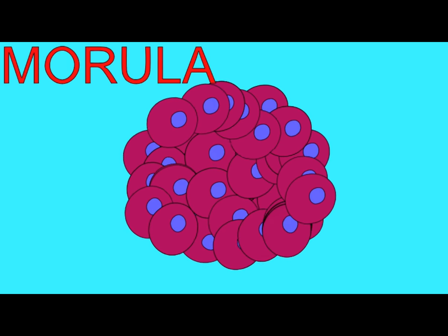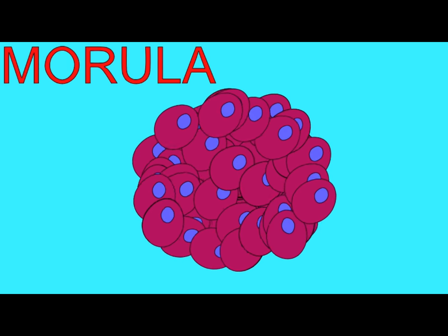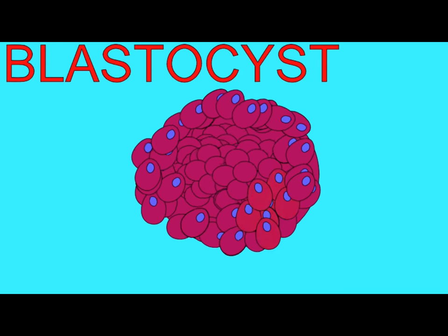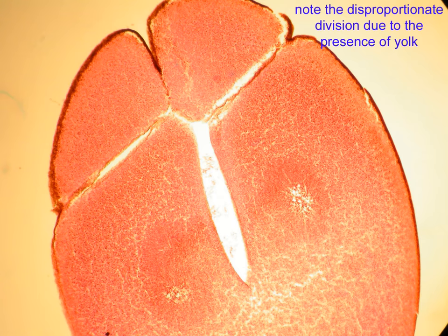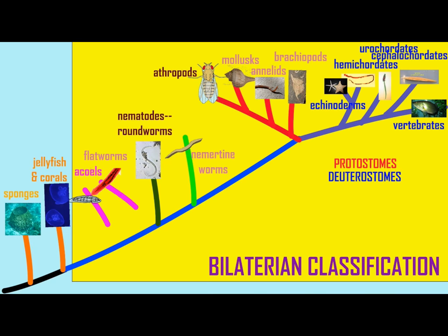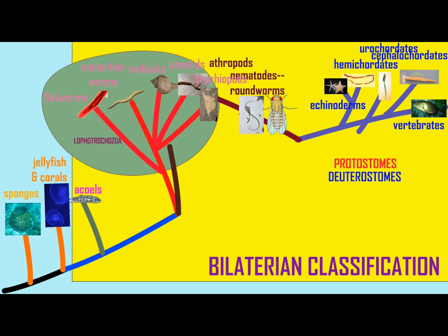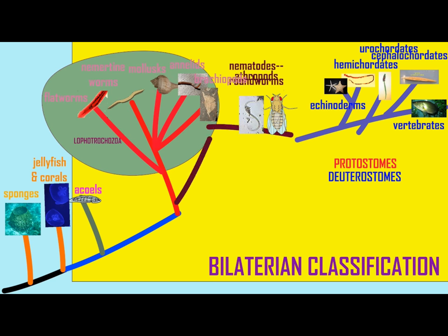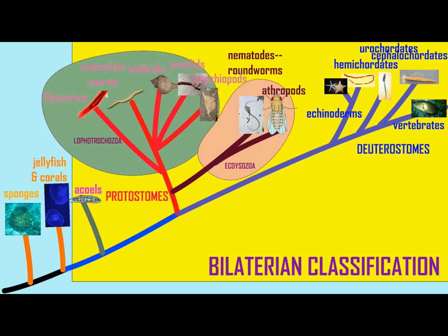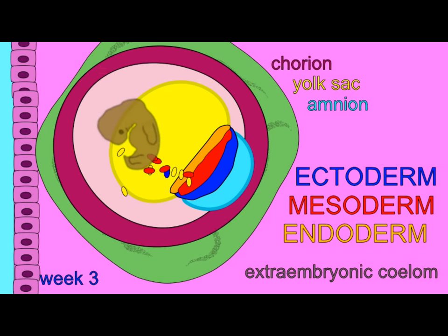Another difference often used is the type of cleavage in the embryo, with new cells being produced radially or spirally. But while radial cleavage is often used to define the deuterostomes, many protostomes display this as well.